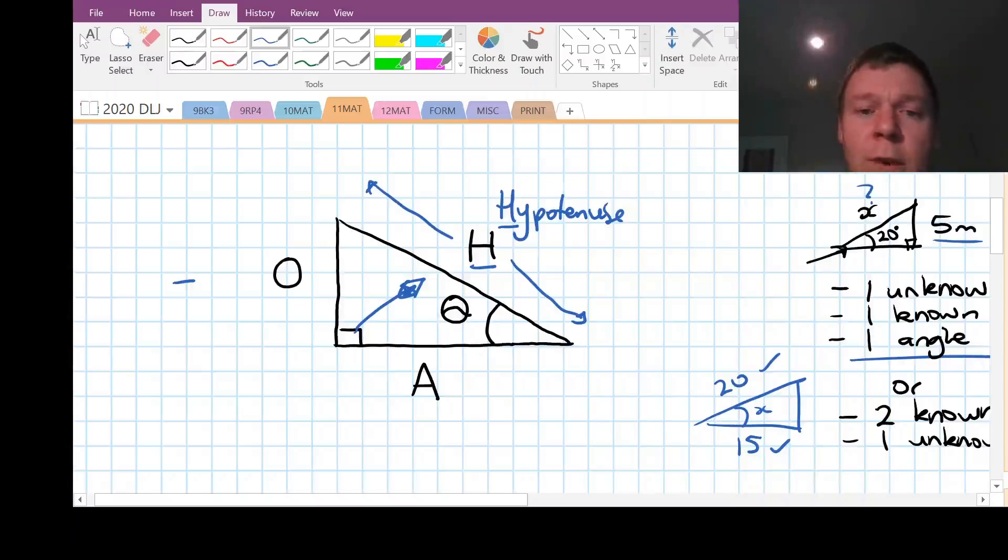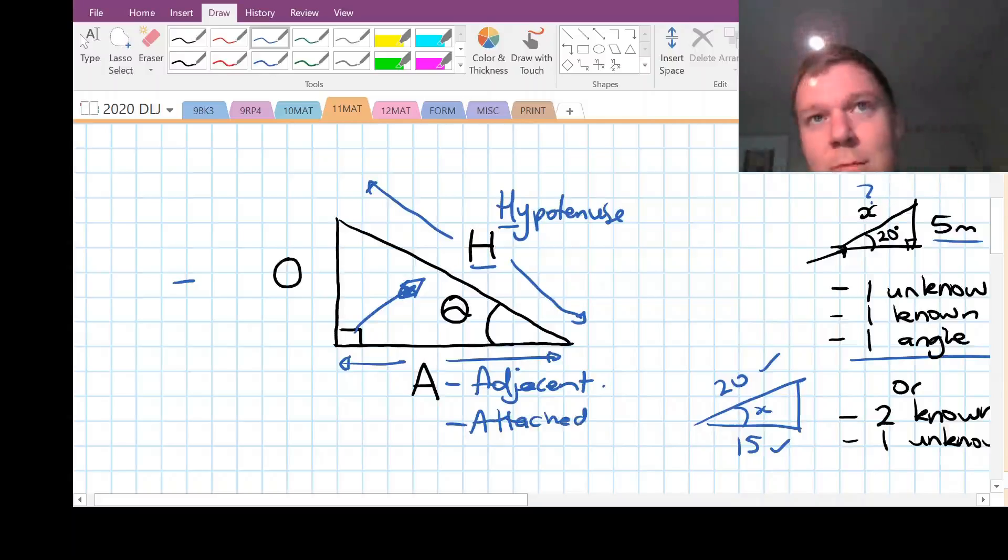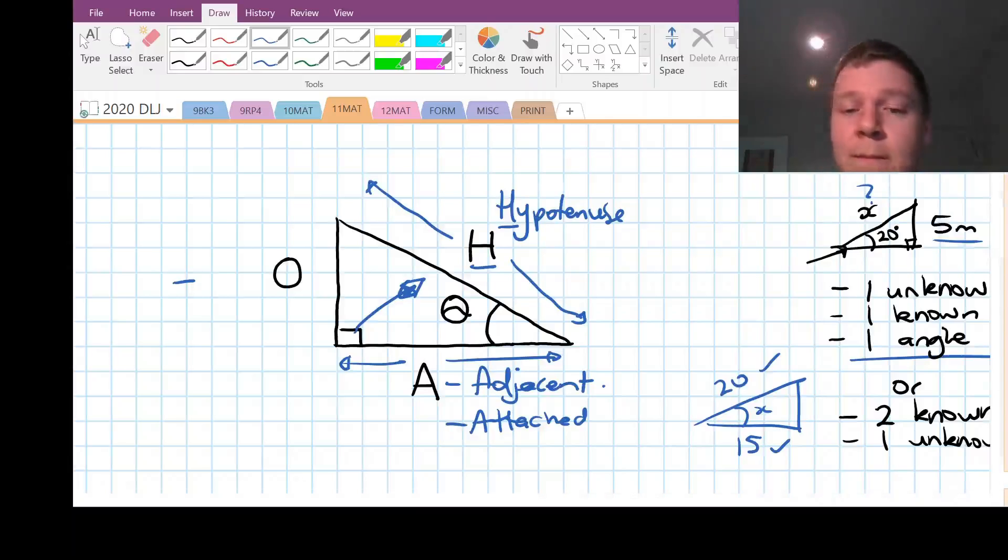So this is always the first step of solving a trigonometry problem, is just labeling what the sides are. So you label h, o, and a. So the other one is a for adjacent. So that means it's from this side, and you can see, I like to actually call it the attached angle. I think that makes a little bit more sense. Sometimes students don't even really know what that word means, but they can see that this side is attached to the angle. I mean, the hypotenuse is attached as well, but it's the other side that's attached to the angle. A for attached.